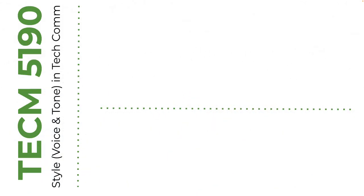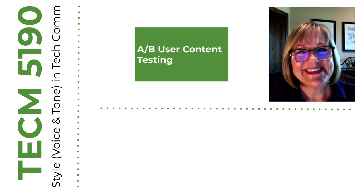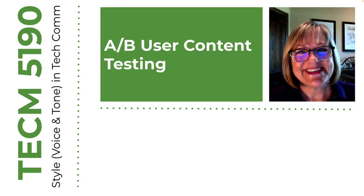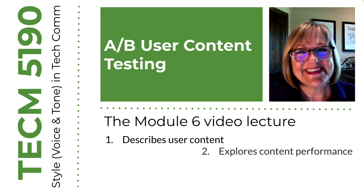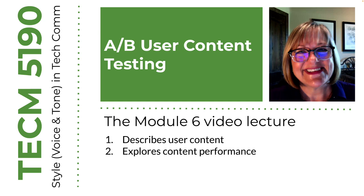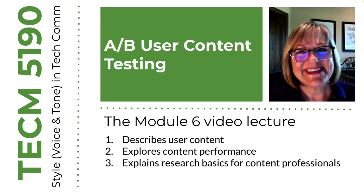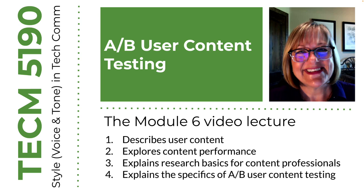Hi there, it's Dr. Kim again. This is module six. I'm going to cover four topics in this lecture. All of them are related to your research project, the A-B user content testing. First, I'll describe what I mean by user content. Second, I'll explain how non-traditional publishers measure the performance of their content. Third, I'll explain some research basics specifically for content professionals. And finally, I'm going to explain the specifics for the A-B content testing project. Let's go.